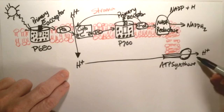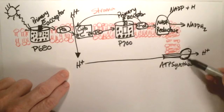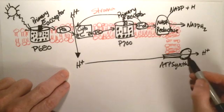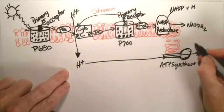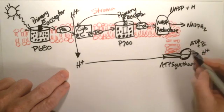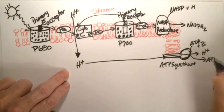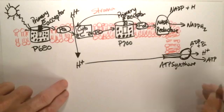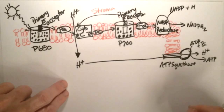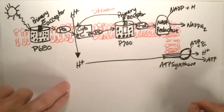This movement, because of diffusion, causes ATP synthase to spin, to physically turn, and the cell uses that to convert ADP plus inorganic phosphate into ATP, and again, storing energy. This ATP, this NADPH2, are both going to be used in the light-independent reaction of the Calvin cycle.